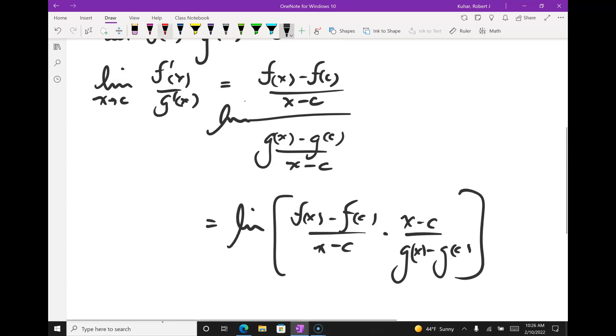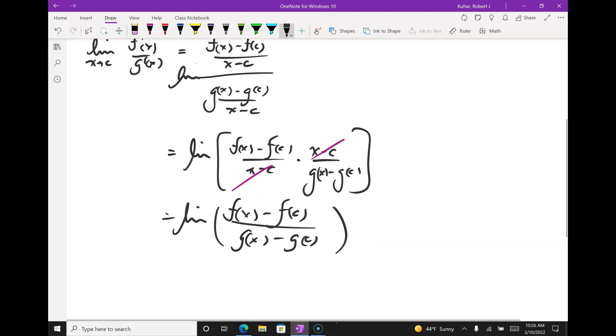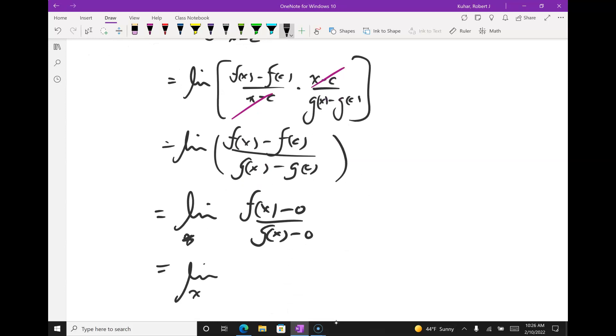But look at what cancels. Notice I get zero over zero here. So, the x minus c is canceled. So, I'm looking at the limit of f of x minus f of c over g of x minus g of c. But I know something about f of c and g of c. It's zero. So, I get f of x minus zero over g of x minus zero.